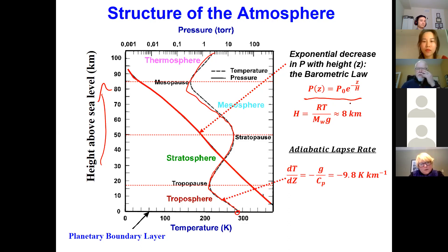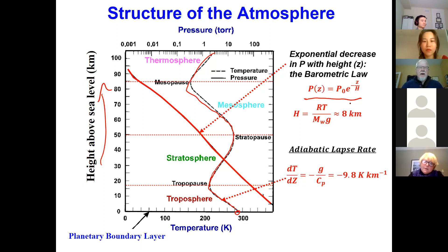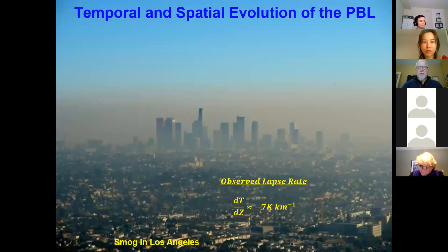We don't have to consider pressure changes much if we're talking about surface exposure, but we do for people living at elevated elevations — as pressure decreases, the concentration of species people are exposed to also decreases. We also have to consider temperature change with height. Normally the adiabatic lapse rate tells us roughly 10 Kelvin per kilometer drop in temperature in the troposphere, though the observed rate can be lower. Most of the action we discuss is in the planetary boundary layer, where surface exposure occurs — but even there, pressure and concentration changes affect exposure.